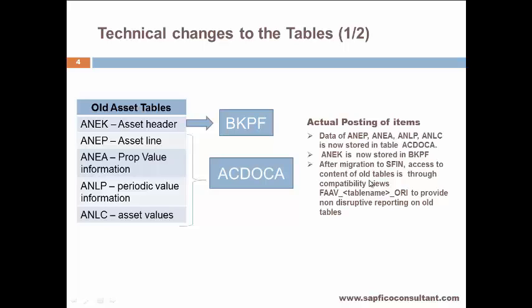After migration to SFIN, access to content of old tables is through compatibility views — FAAV underscore table name underscore ORI — to provide non-disruptive reporting on old tables. If reports were created based on old tables, S4HANA will read that data from the compatibility views. The table name is replaced by, for example, ANEP, ANEA, or ANLP.